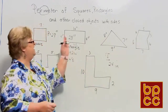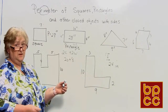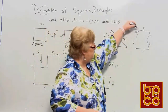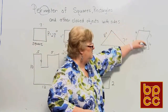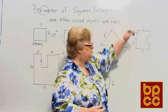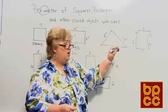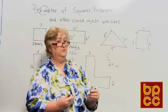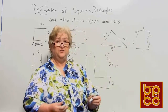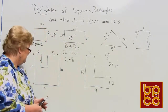For other closed objects with sides, I've labeled every single side in the examples shown here. The only thing you have to do is add up all the sides — whether they be inches, feet, miles, or meters, it doesn't matter. When you finish, write your answer and always label the unit so we know what we're talking about.